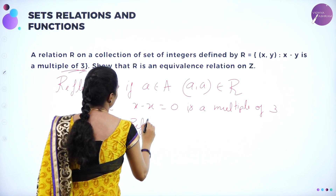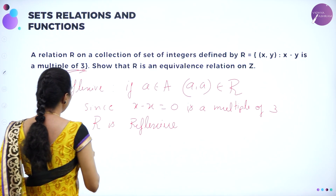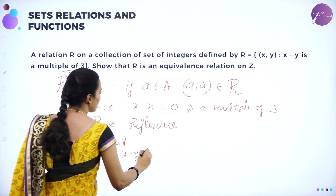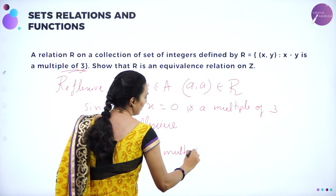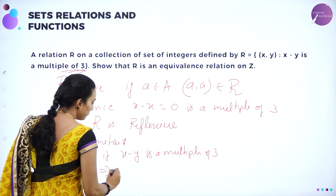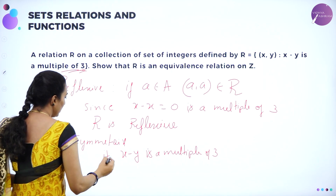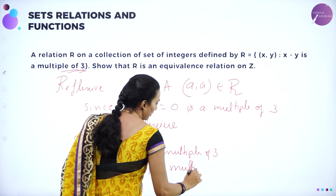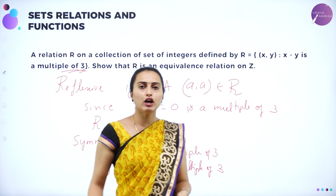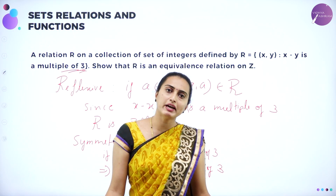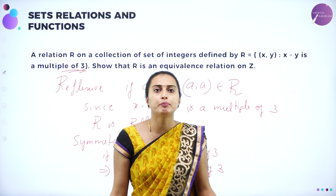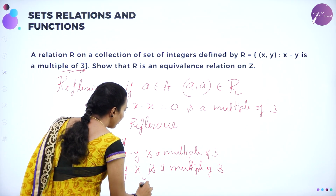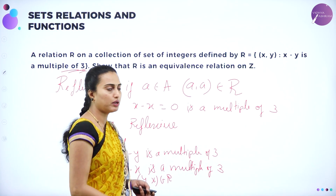Problem: If A = {2,3} and B = {3,4}, find the number of relations that can be defined from A to B. Number of relations = 2 power MN, where M = N(A) = 2 and N = N(B) = 2. So 2 power (2×2) = 2 power 4 = 16. There are 16 relations from A to B. Writing the formula is worth one mark, and the answer is another — together a two-marker.